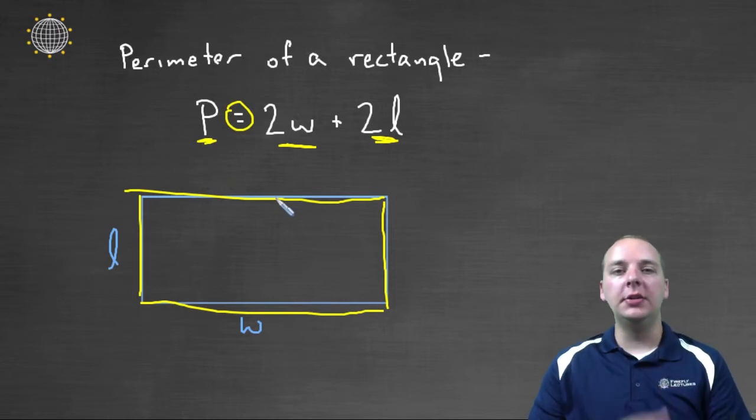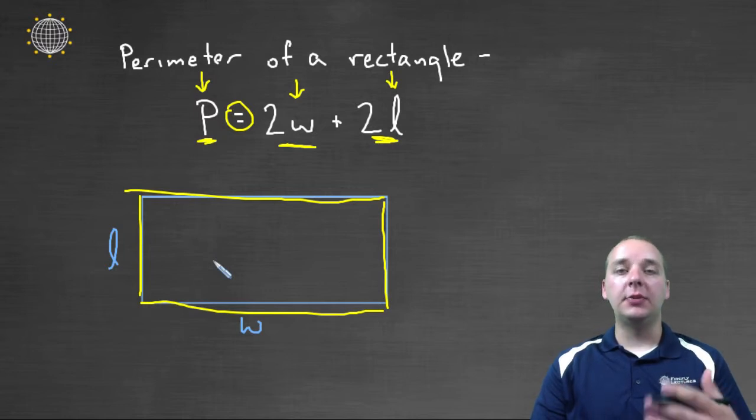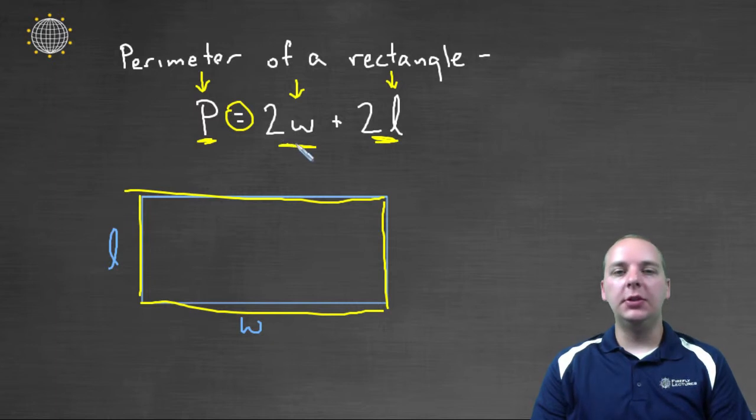So it's called a literal equation, because we have P's, W's, and L. We have more than one variable in the equation. And so it's so many of these, the vast majority of these will be related to some real life situation.